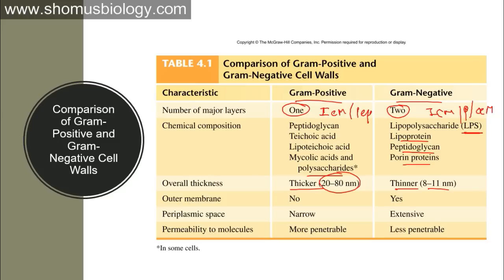The outer membrane is absent in gram positive but is a defining feature of gram negative bacteria. The periplasmic space is very narrow in gram positive but extensive in gram negative. Permeability to molecules is higher in gram positive and lower in gram negative — which may seem surprising but is correct.